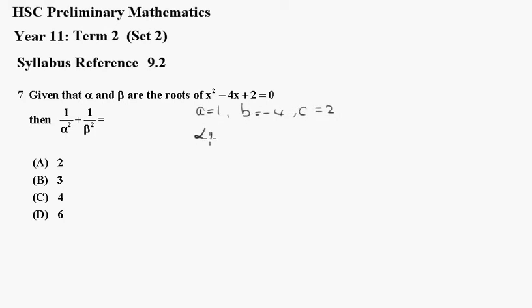So alpha plus beta is equal to minus b over a, which equals 4 over 1, which is 4. Alpha beta equals c over a, which is just 2 over 1 or 2.